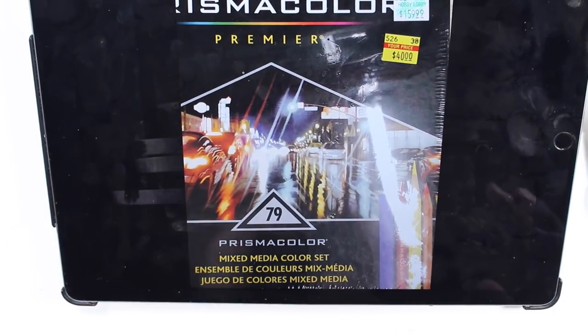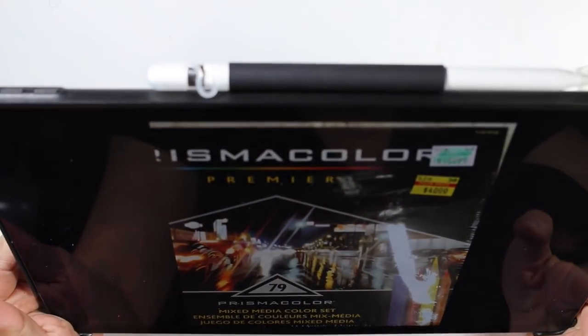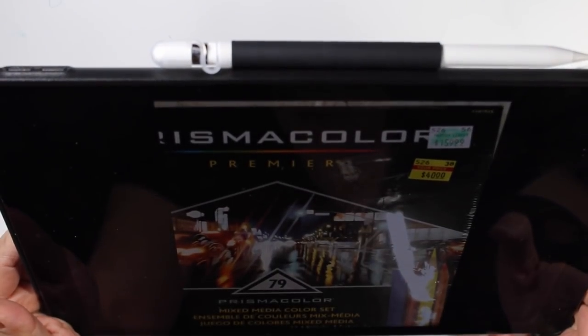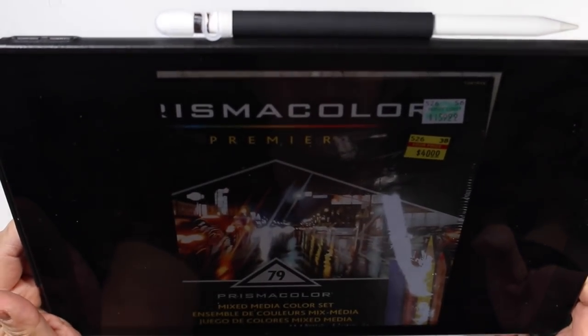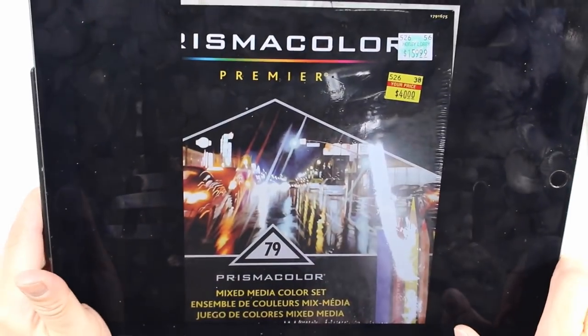Now, this says it's a 79 set, mixed-media color set, Premiere, a regular $160. I don't know if it's other things besides pencils. Maybe it is. It's an ensemble of mixed-media stuff for Prismacolor. Regular $160 for $40. I'm not really interested in Prismacolor stuff.